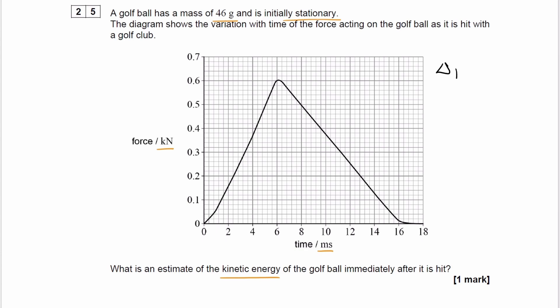We can get the change in momentum from the area under the graph. If it's stationary to begin with, then that means that the change in momentum will just be the momentum of the ball after it is struck.